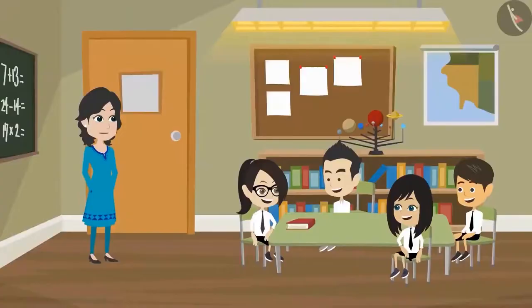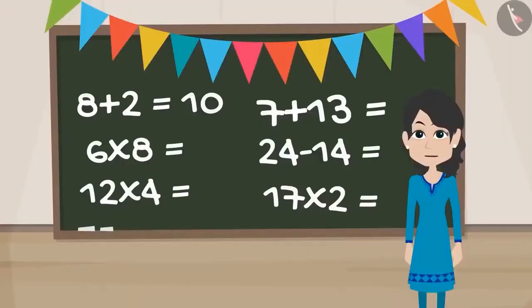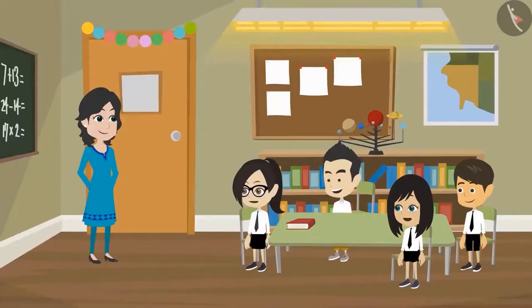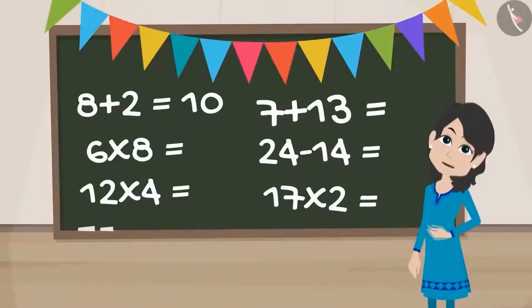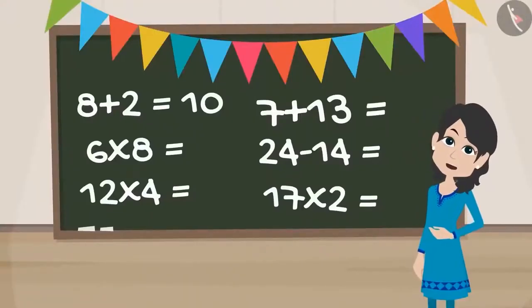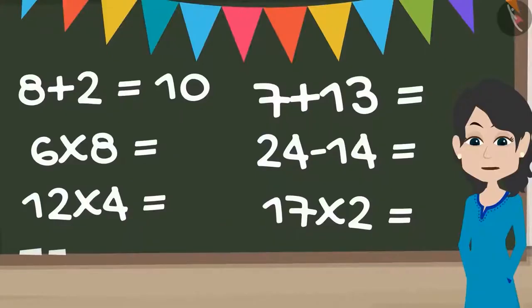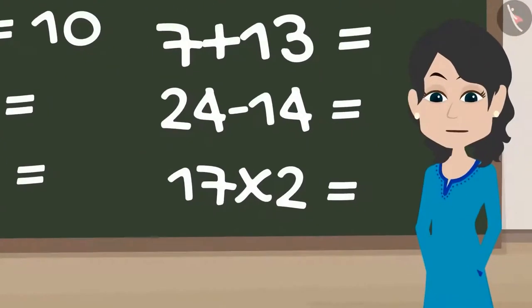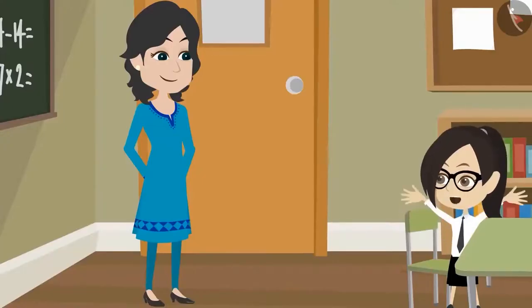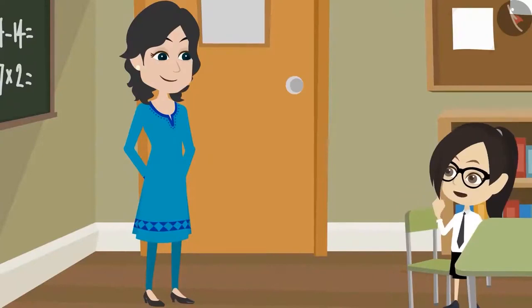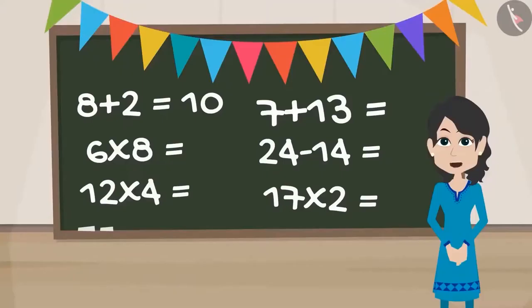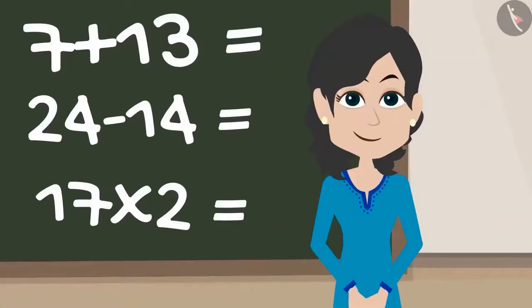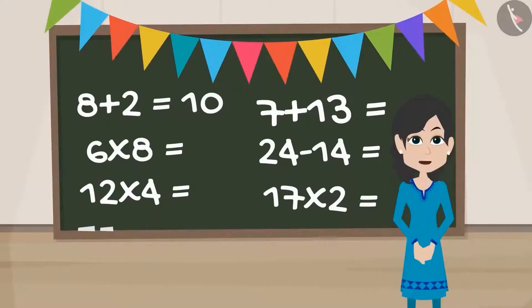So children, let us end today's class here. Wish you a very happy birthday, Madam. Thank you very much for your wishes. You all are invited for the birthday party at 6 o'clock at my home. Madam, we will definitely come but we don't know the route to your home. Oh yes, I forgot to tell you that. Okay children, please open your notebooks and I will give you the directions to reach my home.